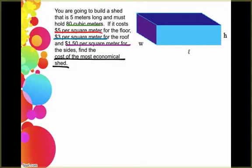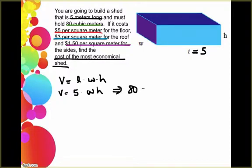So first thing we need to realize is we've already got our picture drawn here. It tells us that the length is five meters, so we already know that equals five. We also know that we have to hold 80 cubic meters. Well that's our volume. So we know that volume is given by length times width times height, but the length is five and the width and the height are variables. And we also know that the volume is 80. So then we could come up with the equation that 80 equals 5wh.